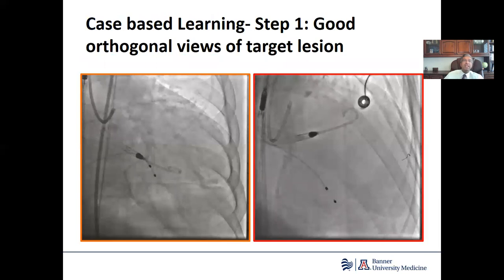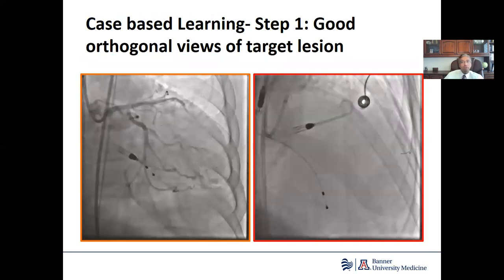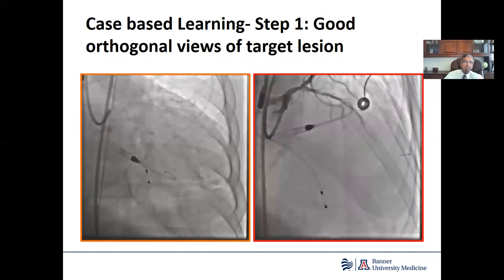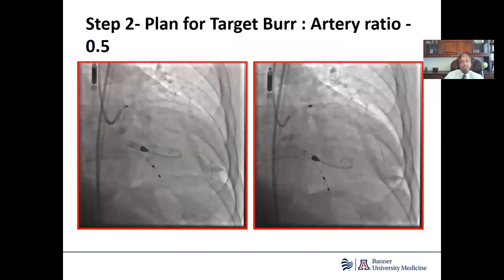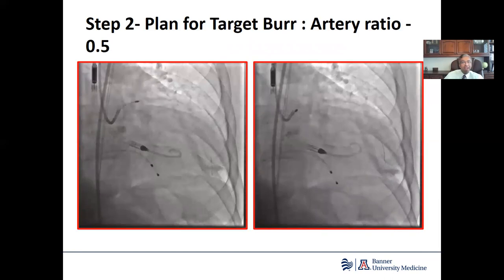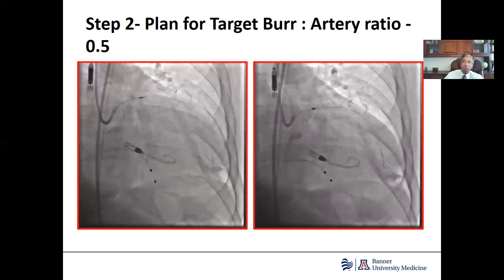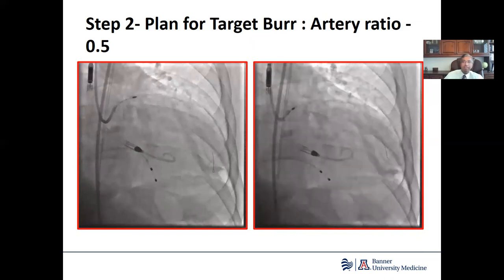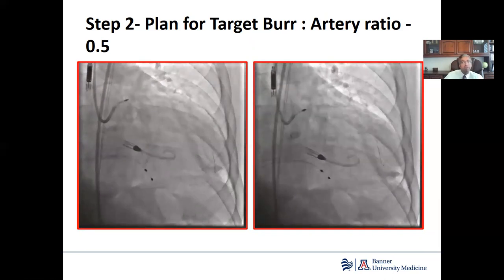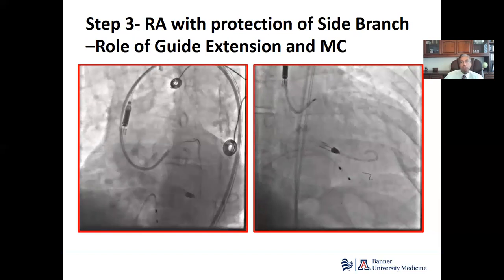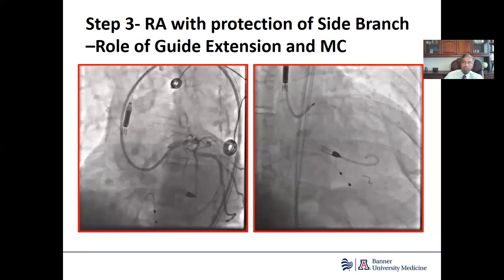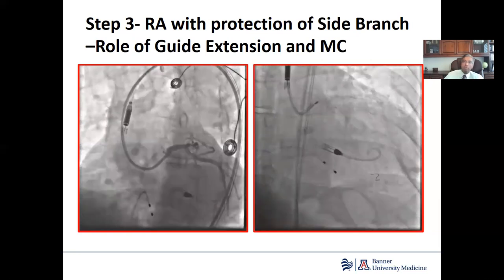This is a case-based learning example. You want to start with a good orthogonal view of both lesions. This is a left main calcified lesion, Medina 1-1-1, illustrated in both the AP caudal and left lateral cranial projections. This illustrates a stepwise burr approach with a target burr-to-artery ratio of 0.5 — the 1.5 mm burr is used in the left panel and the 2.5 mm burr in the right panel, given that the left main was at least 4 mm in that area. Rotational atherectomy is typically performed over a single wire, but if you need to protect the side branch, a guide extension catheter can be used over which atherectomy is performed, protecting the side branch from the burr.